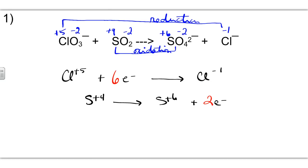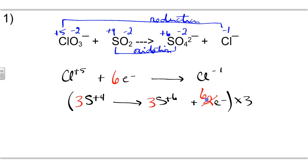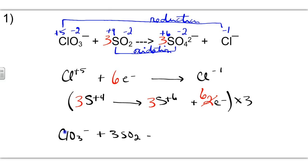Now we need to balance the electrons — we need both to equal six. So we multiply the sulfur half-reaction by three, giving a coefficient of three in front of S⁺⁴, three in front of S⁺⁶, and three times two equals six electrons. Now the electrons are equal: six and six. This tells us the new coefficients for the original reaction, so we place a three in front of SO₂ and a three in front of SO₄²⁻. Our equation is now: ClO₃⁻ plus 3SO₂ yields 3SO₄²⁻ plus Cl⁻.